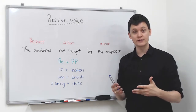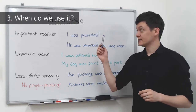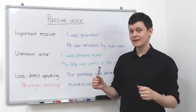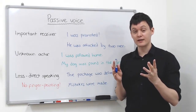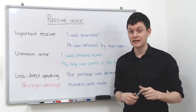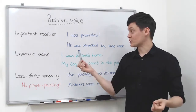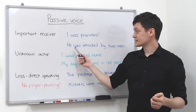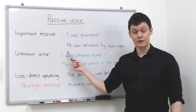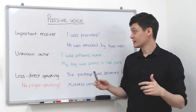Now let's look at when we use the passive voice in daily life. There are three main ways. Number one: the receiver is important. Sometimes we don't care about the actor — the receiver is the important thing. So: I was promoted. The actor is probably the manager who promoted me, but I don't care about the manager. When I tell my friends or family this news, I'm the important one — so I say I was promoted. Next: he was attacked by two men. We don't care about the two men; we care about he, the victim, the person who received the attack. So he is the important one.